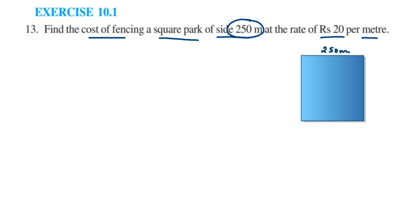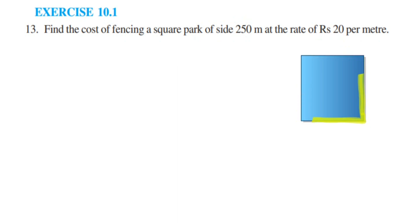Since a person is fencing it — fencing means we usually put a fence around the boundary of the given field. Here it's a square, so we have to put the fencing around the boundary of the square park. That boundary is nothing but the perimeter of the square park.